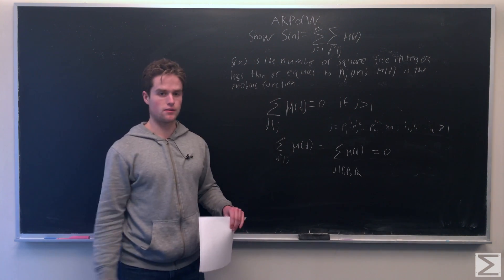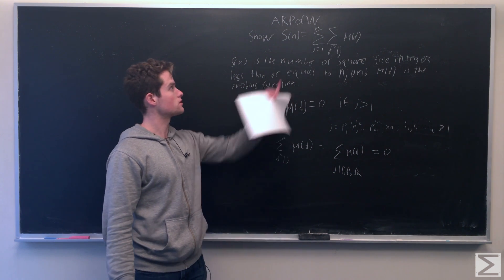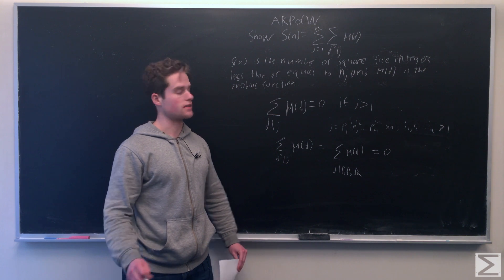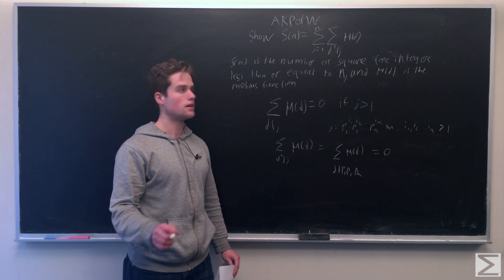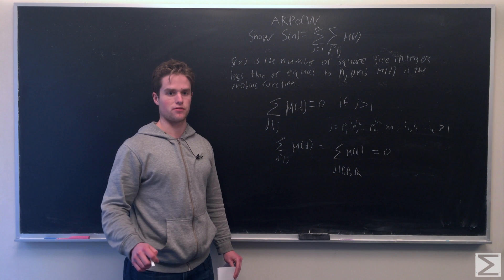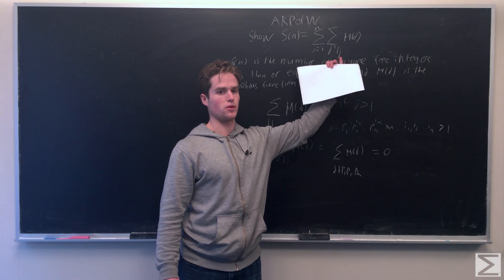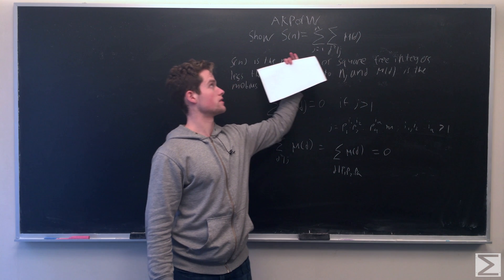So if it's not square-free, the sum will just equal 0. So this sum is really just counting how many numbers less than or equal to n are square-free. If it's not square-free, this is 0. If it is square-free, it's 1. And so the total sum is equal to our s of n.